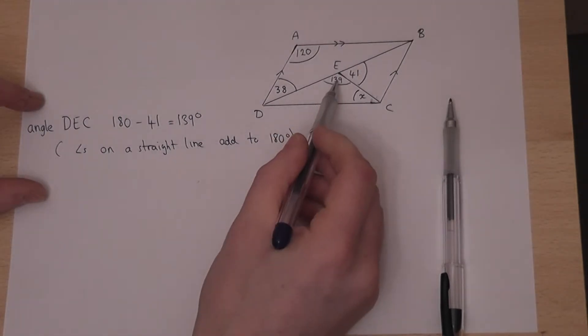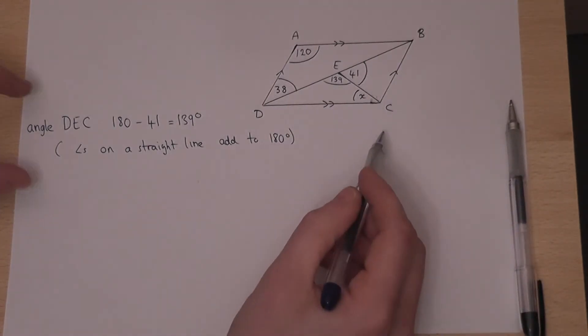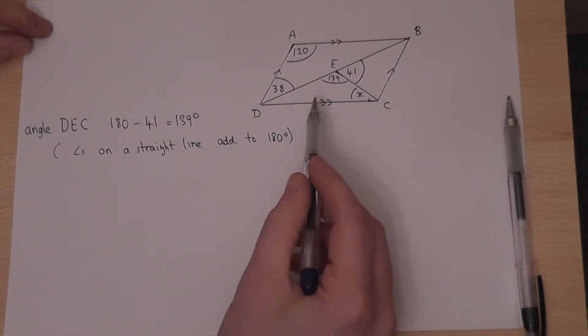So I know 139, and I want to find x. If I knew this angle here, then I could find x quite easily. And we can find that in the following way.